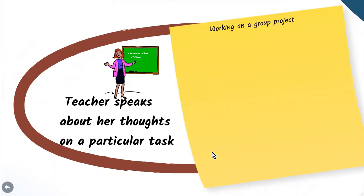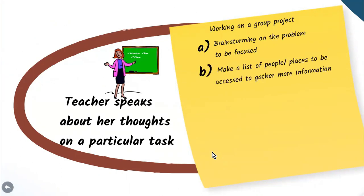A teacher wants children to attempt a group project in which they have to work on a solution to a current problem in the society. So the teacher will say that if she has to go about and attempt this task, she would first brainstorm, sit with the group and do brainstorming on the problem which has to be focused. She will then make a list of people or places to be accessed to gather some information, also identify the resources which are required.